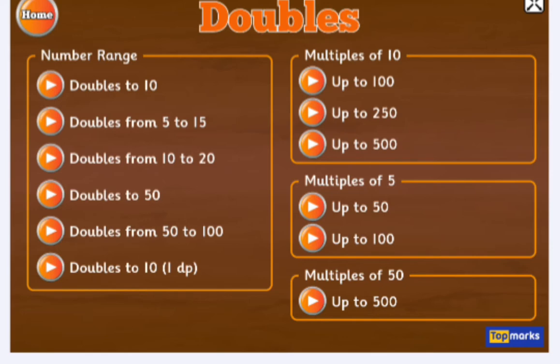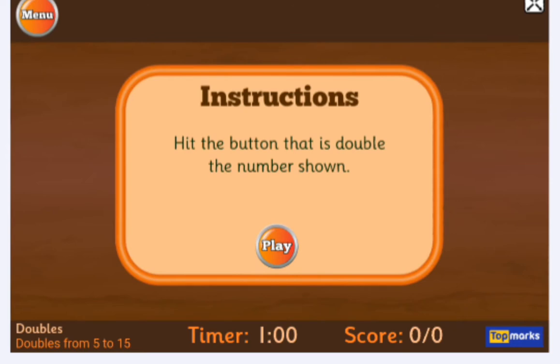You have options to pick from, so take your time to look at what you want to select. For the purpose of this video, I'm going to be doing doubles from 5 to 15. The instruction says: hit the button that is double the number shown. See the timer — it's just 1 minute, 60 seconds — and the scoreboard starts at 0 over 0. I'm going to be as slow as I can so you can follow along on screen.